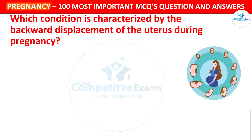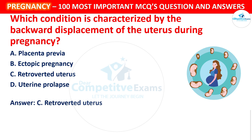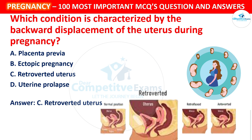Next question: Which condition is characterized by the backward displacement of the uterus during pregnancy? Your options: Placenta previa, Ectopic pregnancy, Retroverted uterus, or Uterine prolapse. The correct answer is Retroverted uterus. A retroverted uterus is a condition where the uterus is tilted backward rather than forward, which may or may not cause complications during pregnancy.